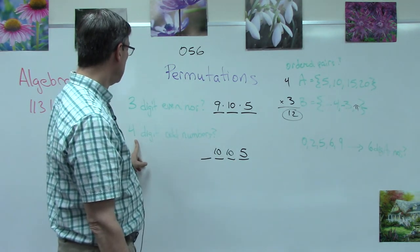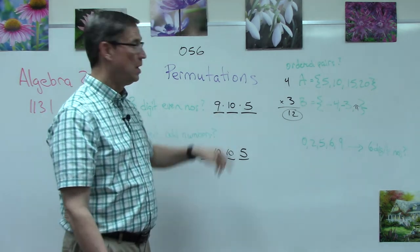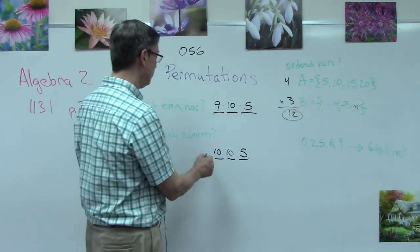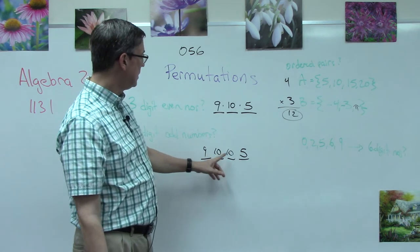Since it is a four-digit number, of the ten possible digits, similar to here, I can use nine of those ten. I just can't use zero. So I would put nine there. So that would be 9 times 10 times 10 times 5, which is 4,500.